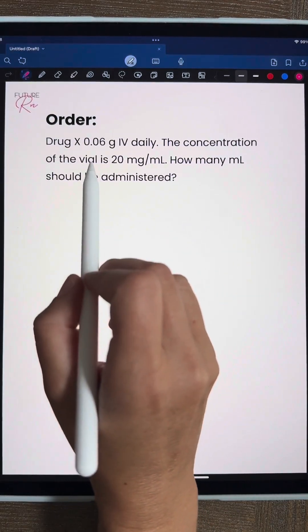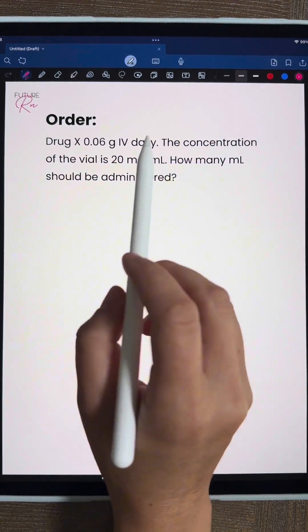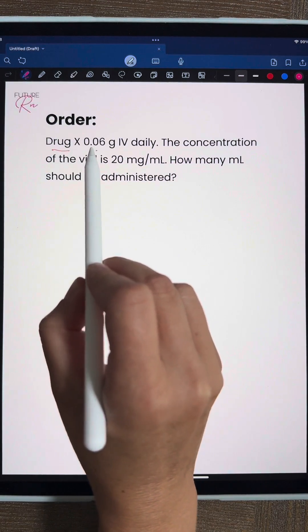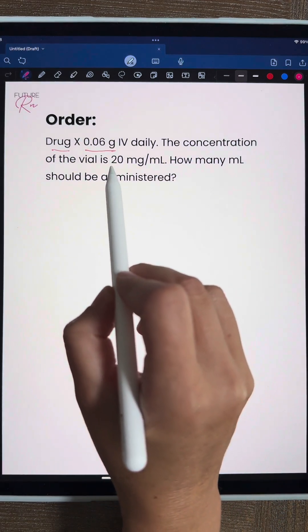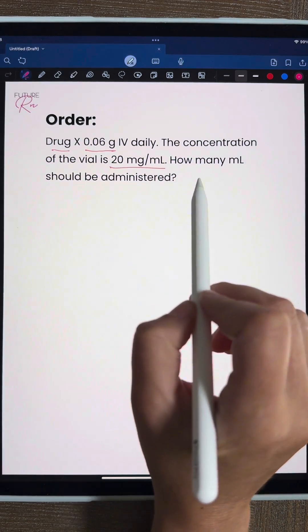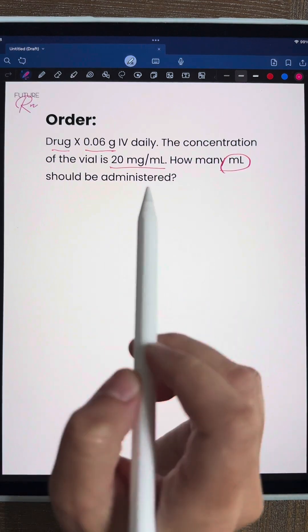Let's do this simple dosage calculation together using dimensional analysis. So our problem reads drug X 0.06 grams IV daily. Our concentration of our vial is 20 milligrams per 1 mL. How many mLs should be administered?